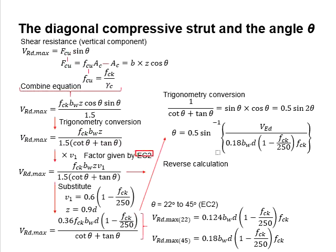In Eurocode 2, a factor of V1 is added to the equations, where V1 is determined in the functions of fck. The Z is taken as 0.9D. Substituting both equations, you will obtain a new equation like this.